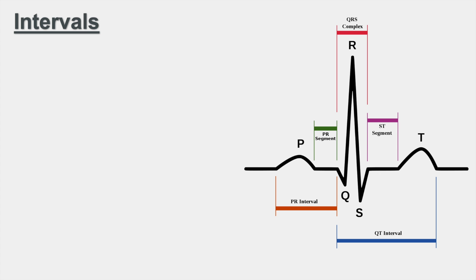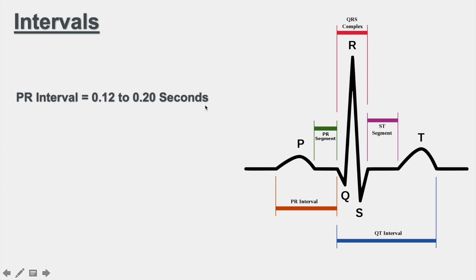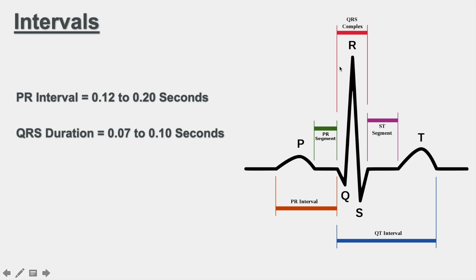Now we'll cover intervals. The PR interval, from the beginning of the P wave to the beginning of the QRS complex, should normally be 0.12 to 0.20 seconds — commit this to memory. Since each large box on ECG paper is 0.20 seconds, if the PR interval spans more than one large box it is considered prolonged.